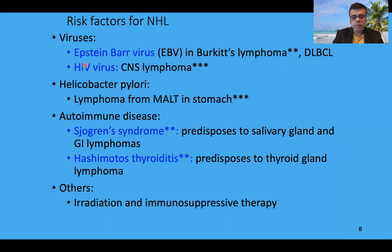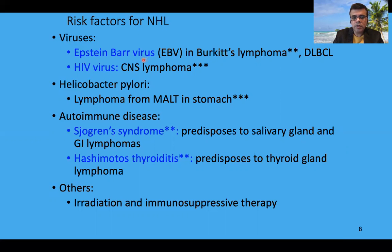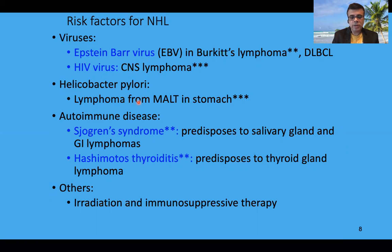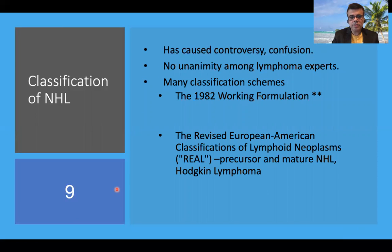Risk factors for NHL: Epstein-Barr virus is regarded as one important risk factor; its genome is positive in many Burkitt's lymphomas and also in DLBCL. These can occur with or without the presence of HIV. Many EBV-affected DLBCL patients also have concurrent HIV infection or are AIDS positive. HIV virus itself can cause CNS lymphoma. H. pylori has been clearly isolated from MALT — mucosa-associated lymphoid tissue — lymphoma in the stomach. Autoimmune diseases like Sjögren's syndrome can also predispose to various lymphomas, and Hashimoto's thyroiditis is a predisposing factor for thyroid lymphoma. Irradiation and immunosuppressive therapies are also predisposing factors for NHL.